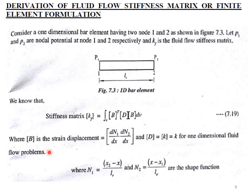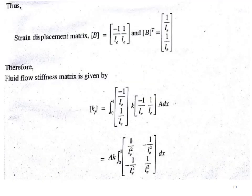The stiffness matrix Kf is given by the integral: Kf = ∫ B^T · D · B dV, taken from a previous derivation. B is the strain-displacement matrix: [dN1/dx, dN2/dx], and D equals Kf for one-dimensional fluid flow problems. Here N1 = (x2 - x)/Le and N2 = (x - x1)/Le are the shape functions for this bar element. Therefore the strain-displacement matrix B = [-1/Le, 1/Le] and B^T = [-1/Le, 1/Le]^T. Note: there is a small sign correction — it should be -1/Le and 1/Le.